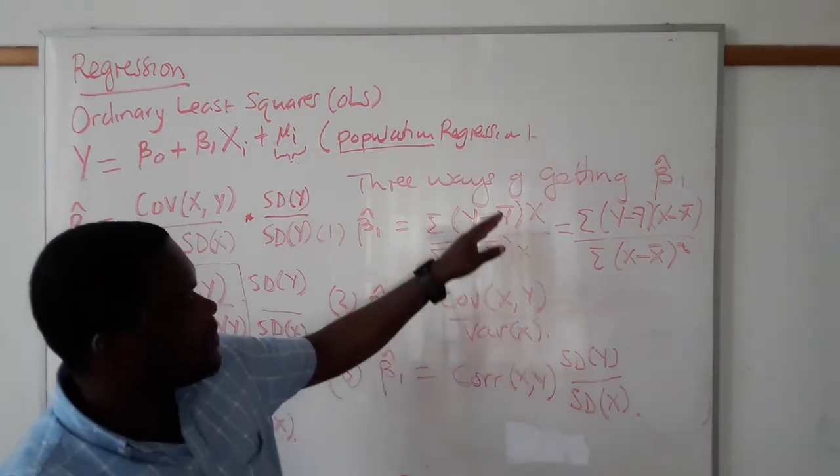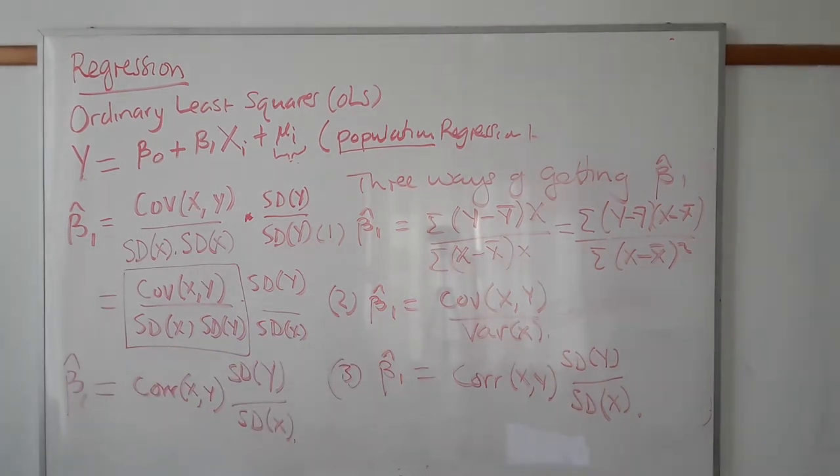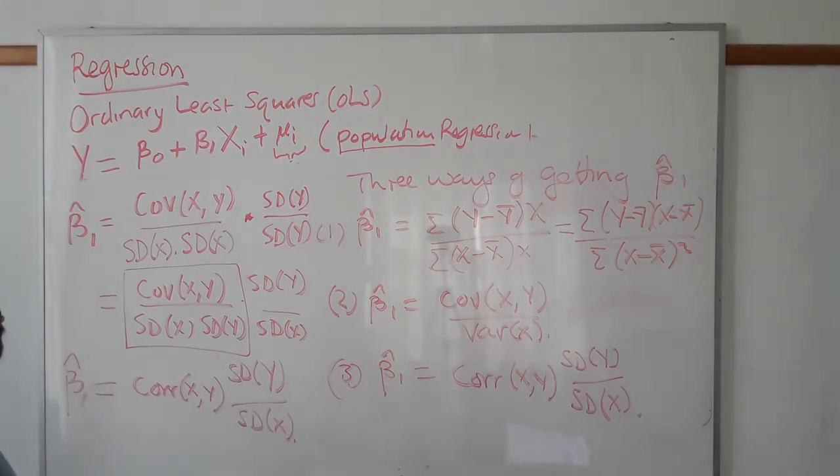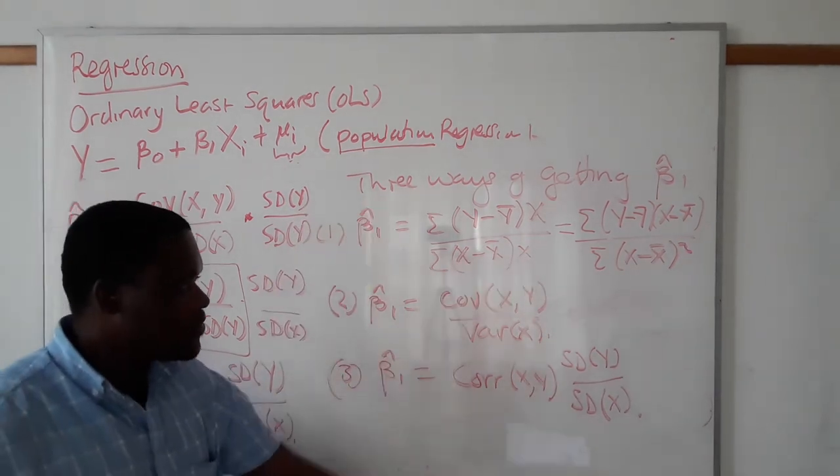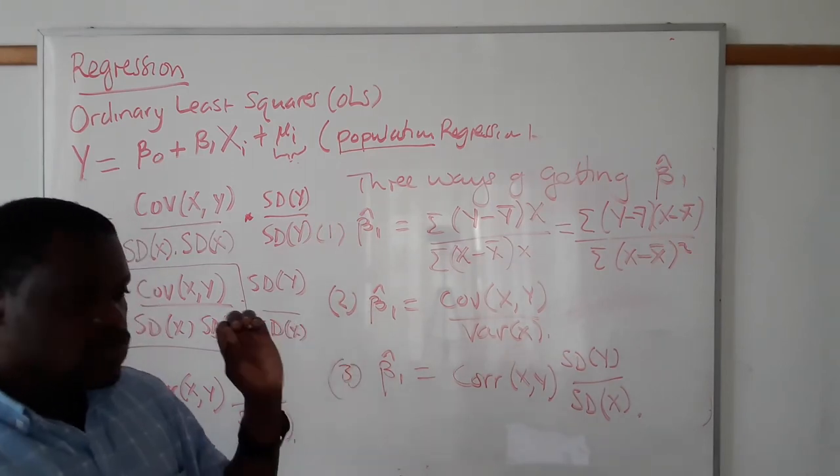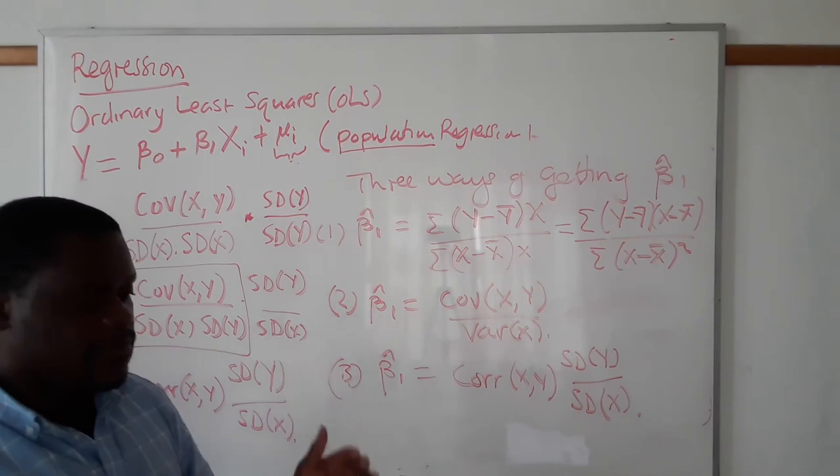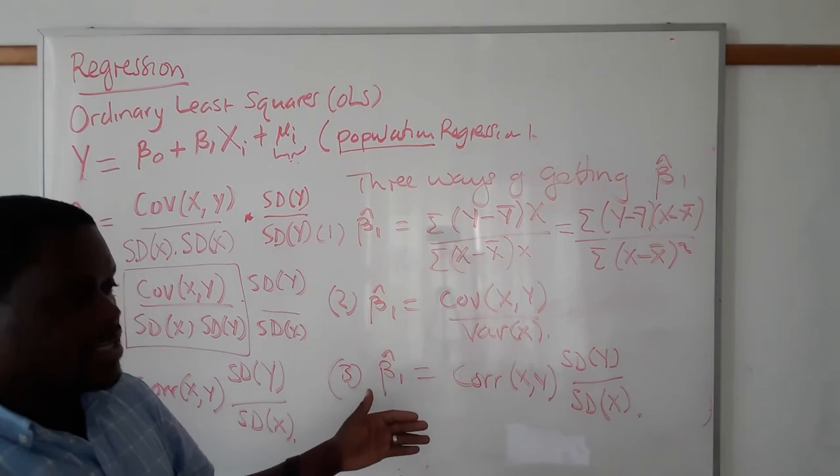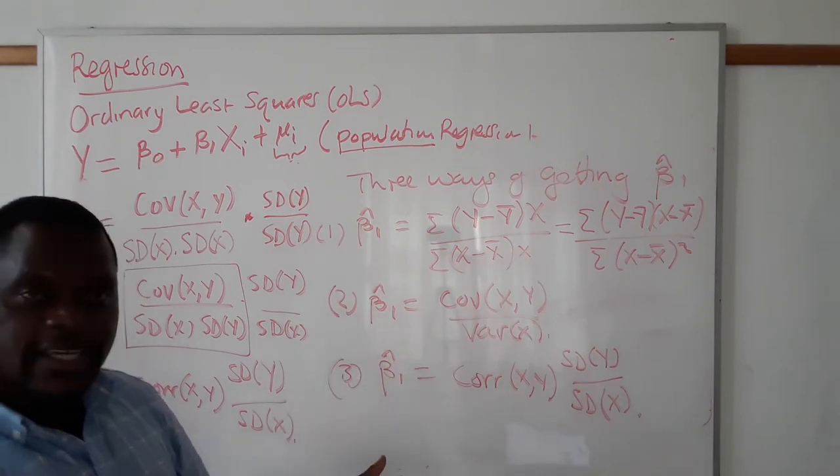And these are called estimators. These formulas are called estimators. They help us find an estimate of β₁. Now, in an exam situation or a test situation, I can give you any of this information. Your job is to assess the type of information presented in the question.